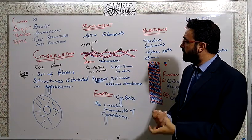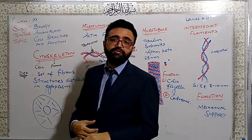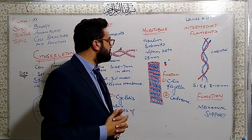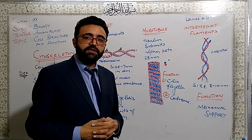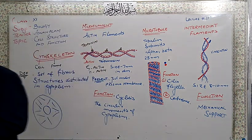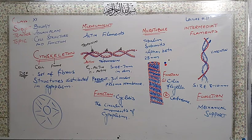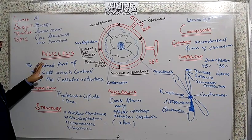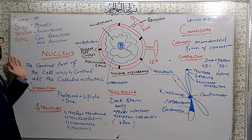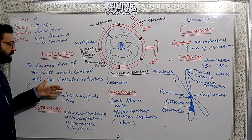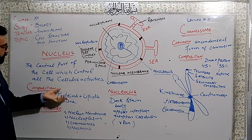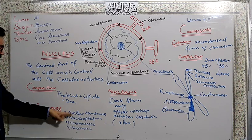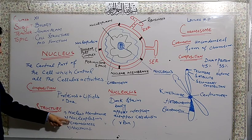My dear students, our next topic is nucleus. The nucleus is the central part of the cell, the nucleus which controls all the activities of the cell. Usually it is composed of proteins, lipids, RNA, and DNA. Its structure includes nuclear membrane, nucleoplasm, chromosomes, and nucleolus. First of all, coming towards the nuclear membrane.